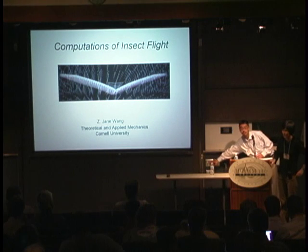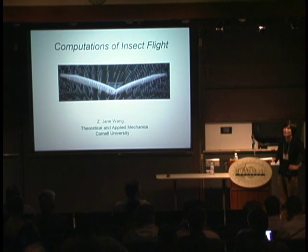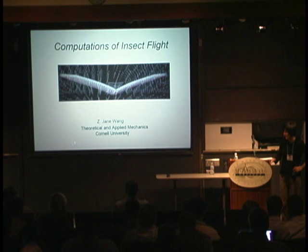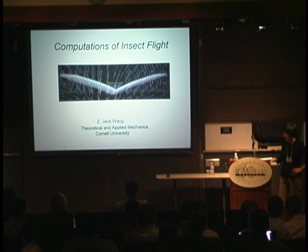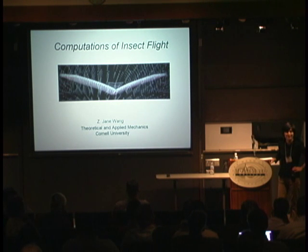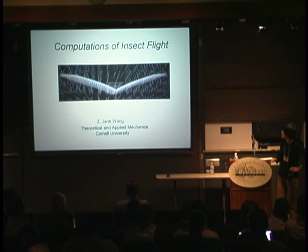To orient you with the class of problem we're interested in: it's mostly inspired by insect flight. If you think about how living species move, whether birds, insects, or fish, they locomote in fluid. The question is, how do they do it, and do they do it efficiently? Can we try to understand some basic physical principles governing this sort of behavior?